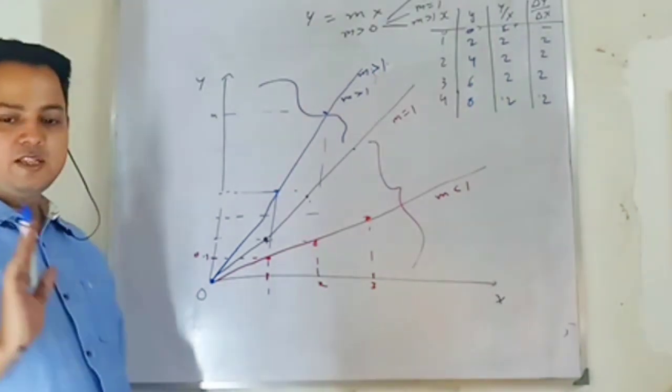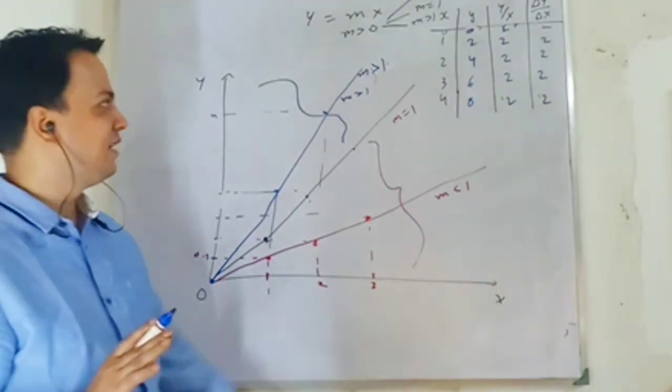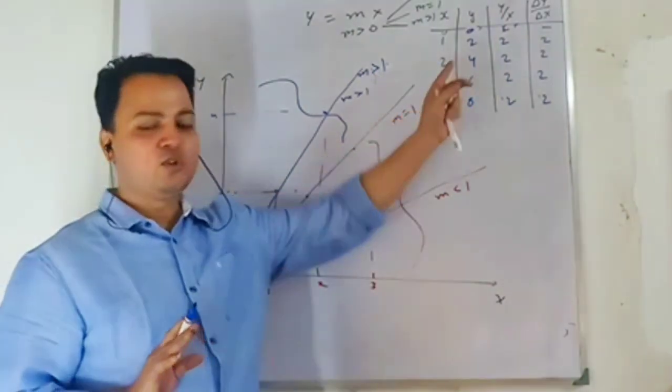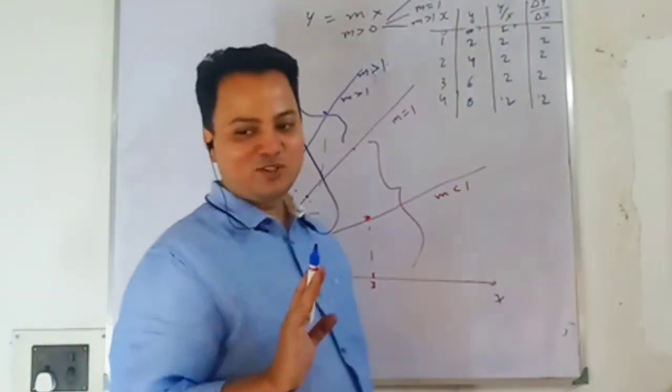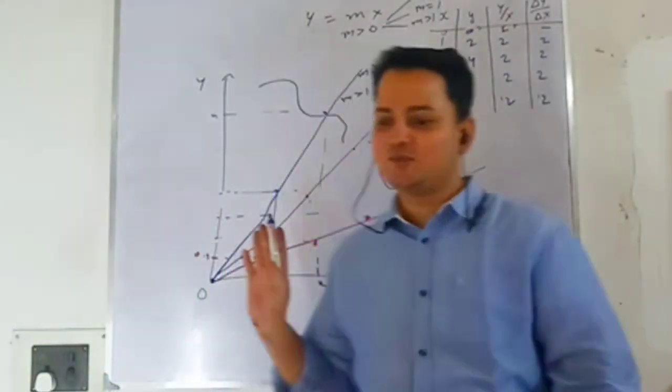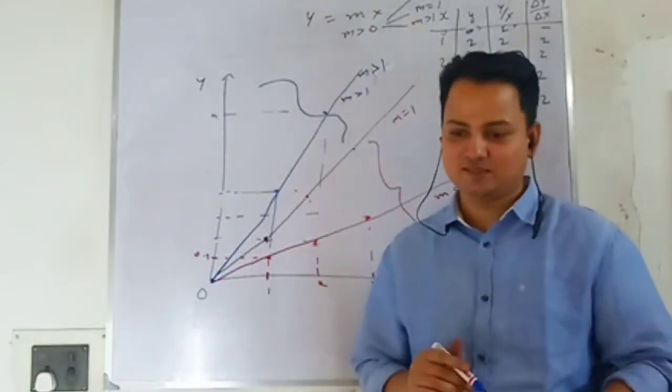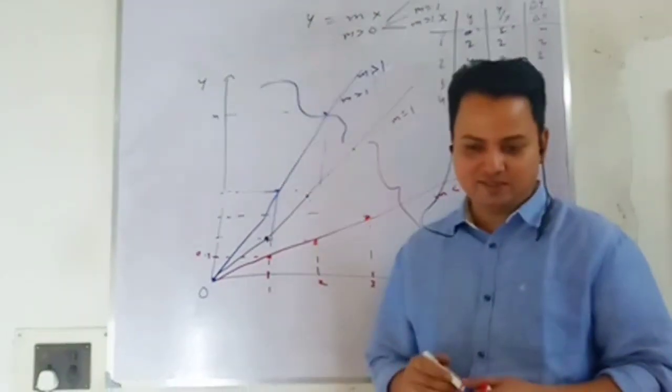Proportional relationship means that the ratio between two variables is constant. That is the definition — don't add anything more. Is that clear?